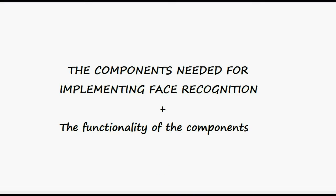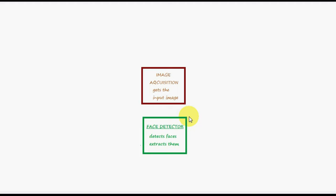Let's begin by looking at what parts we have covered so far and what still needs to be covered. So far in the previous levels, we have covered image acquisition, which gets the input image — either by browsing an image from a folder on your computer, or by taking a live image from the webcam attached to your system. The face detector takes this image and detects faces from it using the Viola-Jones algorithm. Once it has detected the faces, it locates, marks, and if needed, extracts them. This is the part we have covered so far.